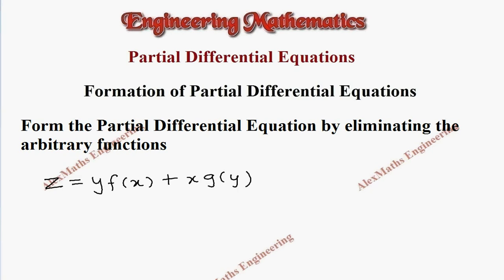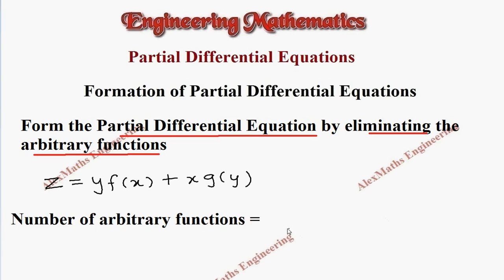Hi students, this is Alex here. In this video, we are going to form the partial differential equation by eliminating the arbitrary functions. In this given question, we find two arbitrary functions, so the number of arbitrary functions equals 2. Those are function f and g.